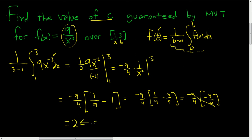So this is the average value. Now it didn't ask us for that. It asked us for the value of C guaranteed by the mean value theorem. Well, all we have to do is set f of C equal to 2 and solve. And we're done.